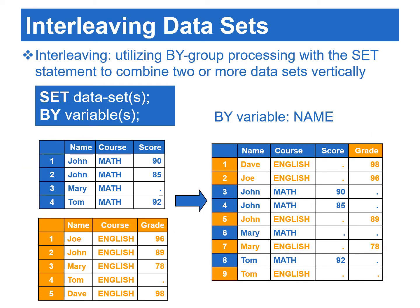Another method to combine data sets vertically is interleaving data sets, which utilizes by group processing with the set statement. The number of observations in the resulting data set is the sum of the observations from all of the input data sets. The observations in the resulting data set are arranged by the values of the by variables. Within each by group, the order of the observations is arranged by the order of the input data sets.